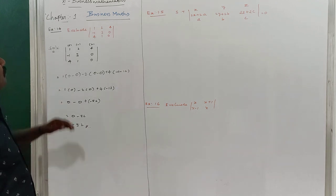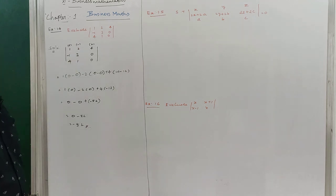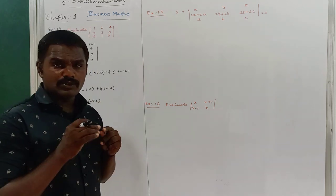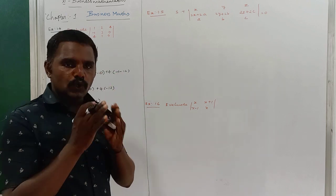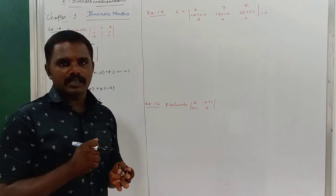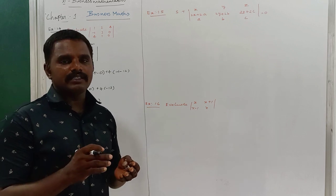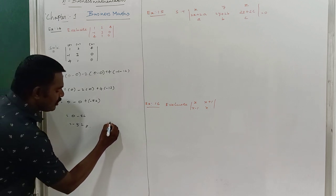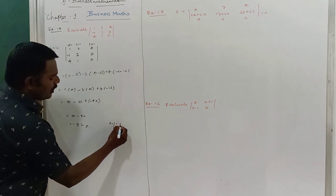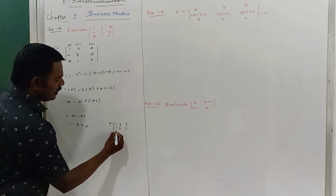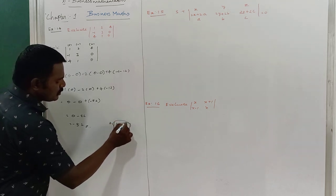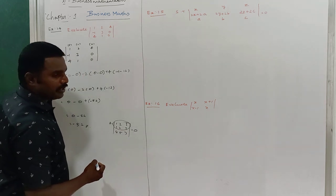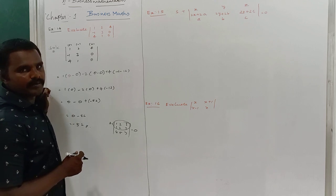So remaining 0 minus 52, it is equal to minus 52. This is the value of the determination. Next, I want to share something about the determinants. In case you have to choose one determinant, if any two rows and two columns are equal for the determinant, the value of the determinant is going to be 0. So I will give one example. In case I want to take the determinant A: 1, 2, 3, 1, 2, 3, 4, 5, 7 — these two rows are identical, means the value of the determinant is going to be 0. This is a property of the determinants.